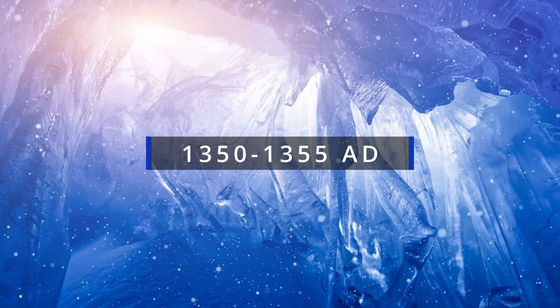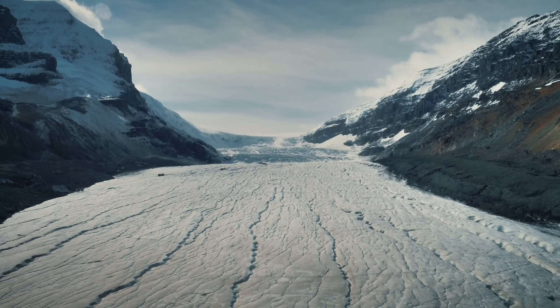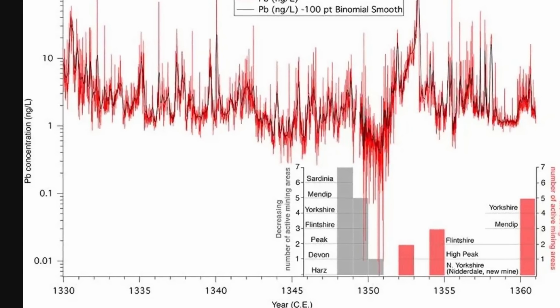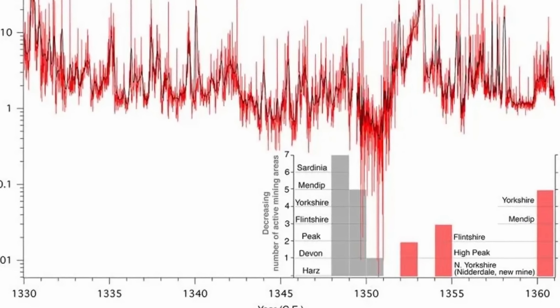By going deeper and deeper into the layers of ice, you sort of go back in time. Although most studies today focus on CO2 levels and other greenhouse gases, inside these samples we usually find a lot of different pollutants as well, which can serve as a very important indicator for many different historical events. One example is from the 14th century — by looking at ice samples formed between 1350 and 1355, especially in glaciers in various locations in Europe, researchers discovered an unusual dip between the years 1349 and 1353 when measuring a concentration of lead.